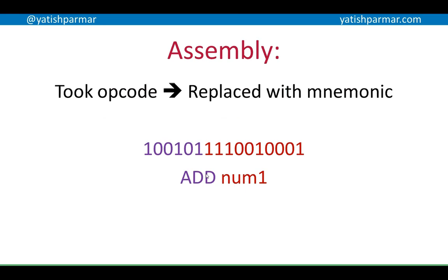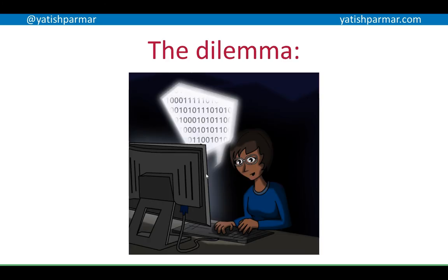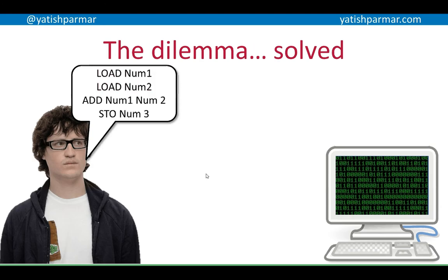Assembly language basically took an opcode — for example, 100101 — and replaced it with a mnemonic, so it became easier to work with. You weren't working with opcodes and binary addresses; you were working with a simplified instruction and an abstract variable name. But the dilemma is that the machine basically speaks machine code — binary — whereas we are working in something closer to human language.